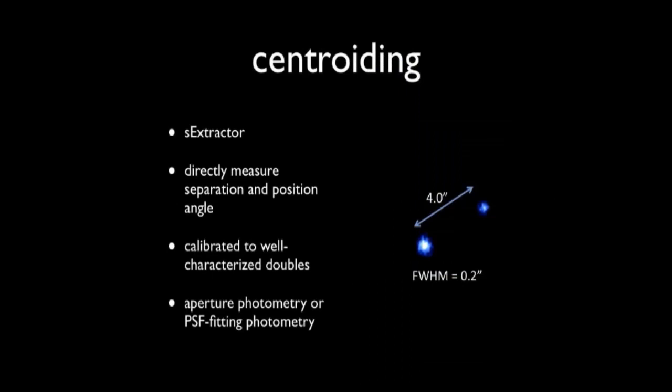And the centroiding part of it is fairly simple. I use a source extractor and just directly measure the position angle and separation. My pixel scale for my detector is calibrated to well-characterized doubles, as I think a lot of you do. I don't have any fancy techniques for that yet. And then I just do simple aperture photometry or PSF fitting photometry with standard available packages. I generally can do that. The seeing at Sedgwick, like I said, is pretty bad. So I can do this generally for separations that are like two arc seconds or greater.